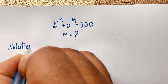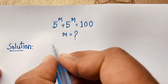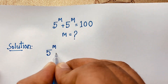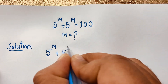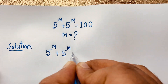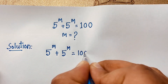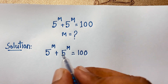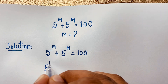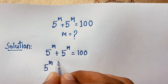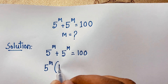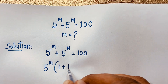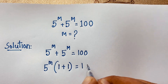Our question is: 5 to the power of m plus 5 to the power of m is equal to 100. Now, you can see here, 5 to the power of m is common. So this divided by this is 1, plus this divided by this is also 1, is equal to 100.